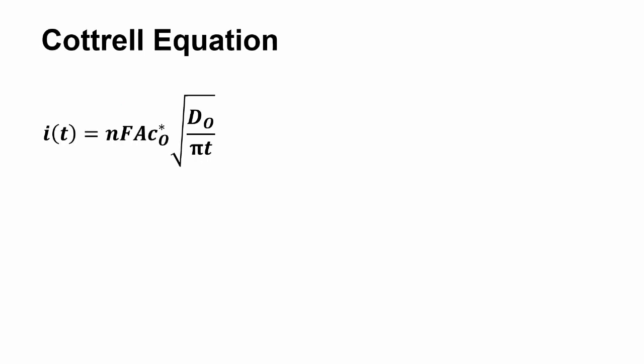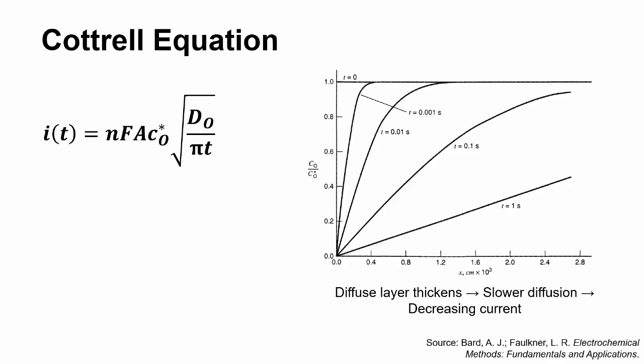The solution to this dynamic model is the Cottrell equation, which predicts that current will decay as 1 over the square root of time after a potential step. This can be explained by the thickening of the diffuse layer with time, which reduces the concentration gradient and therefore reduces the diffusion rate, so the diffusion-limited current also decreases.